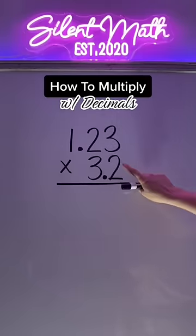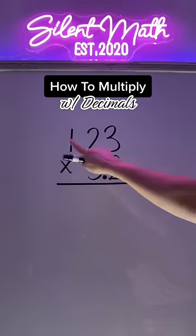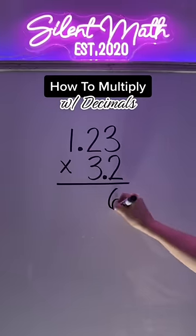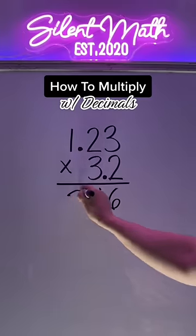Let me show you how to multiply with decimals. The first thing you want to do is grab this digit and multiply it across. 2 times 3 is 6, 2 times 2 is 4, and 2 times 1 is 2.